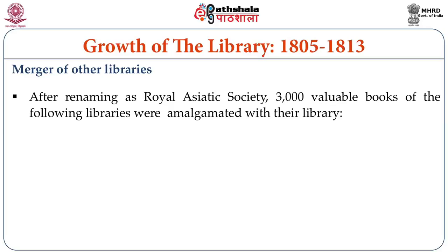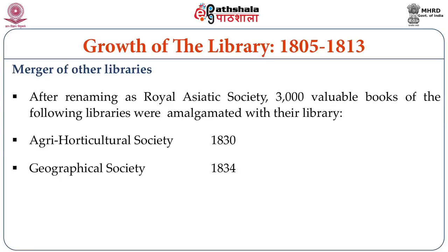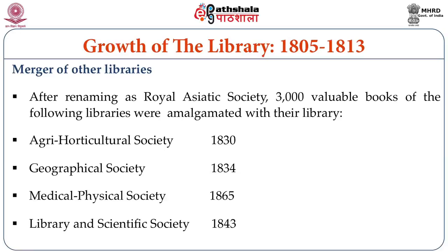From time to time, a large number of public libraries in Mumbai were purchased and added to the Town Hall Public Library or Asiatic Society Library. These include the Agri Horticultural Society Library added in 1830, the Geological Society Library in 1834, the Library of the Scientific Society in 1843, and the Medical and Physical Society Library in 1865.